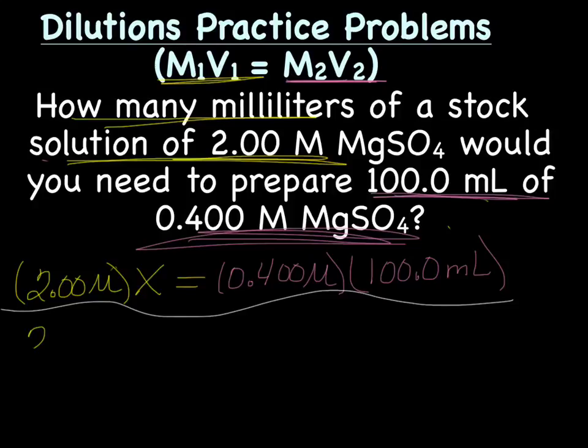So on the left side, we still have 2.00 molar X. On the right side, we'll have 20.0 molar milliliters. And the reason I wrote 20.0 is because we have 3 sig figs and 4 sig figs. So we need to keep the 3 sig figs.